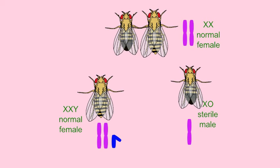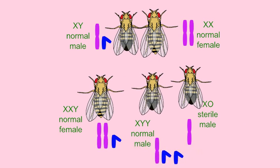Although the Y chromosome carries a necessary gene for male fertility, it is the single X chromosome compared to the two copies of each autosome that determines male gender in flies. XY and XYY individuals are male and fertile, while XO individuals — those with only a single X chromosome, the O representing the absence of a second chromosome — are male but sterile, because they lack the Y chromosome.